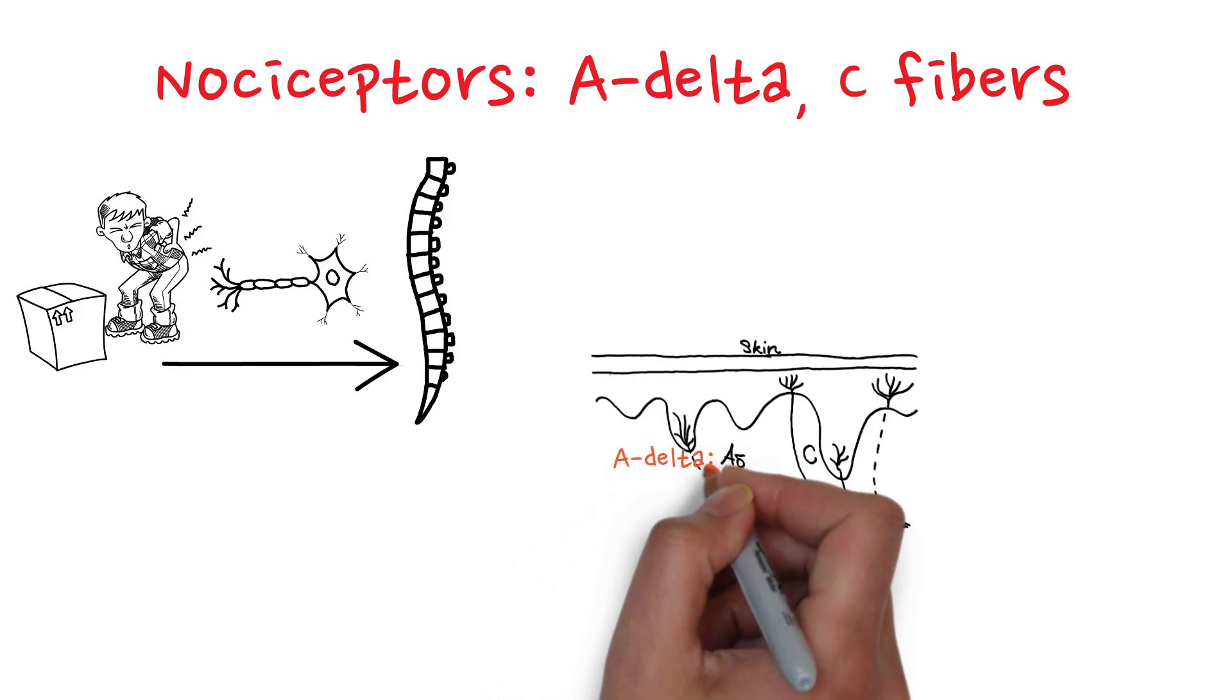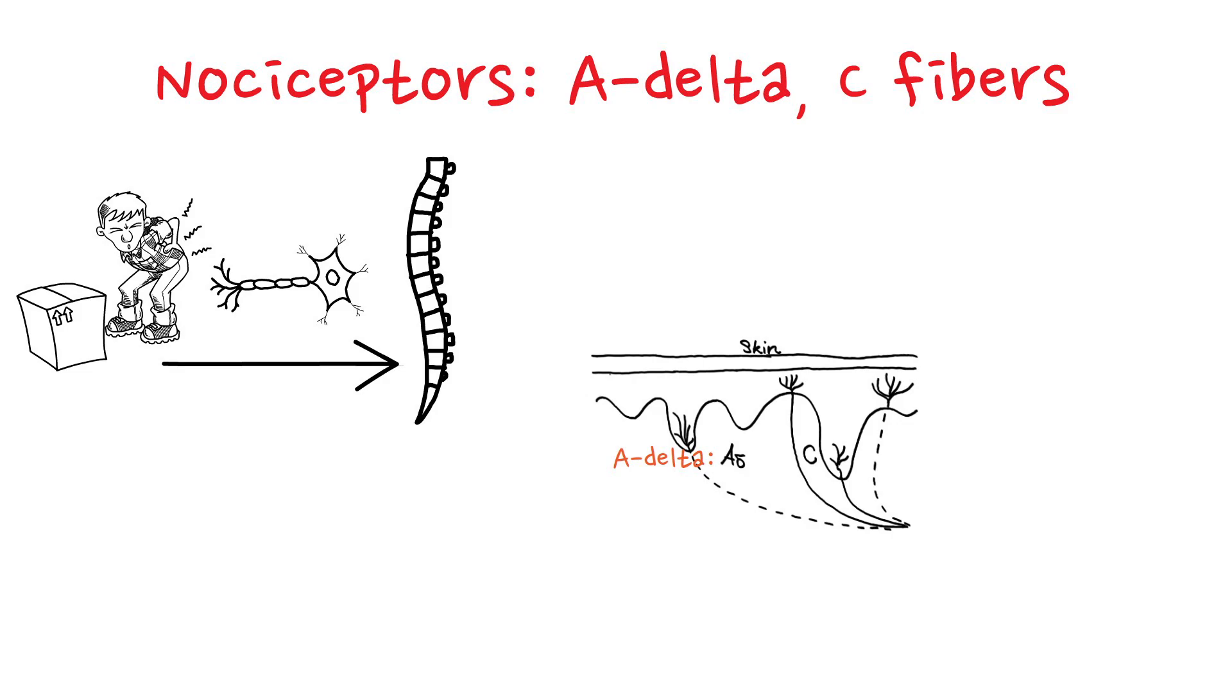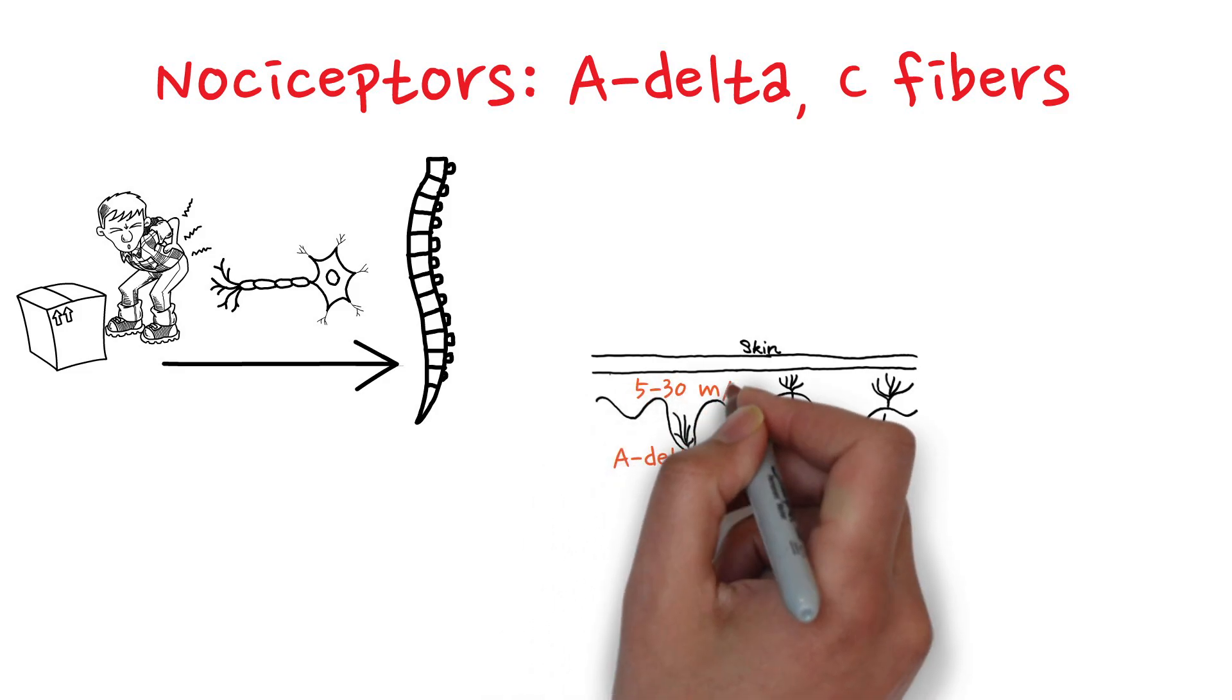Let's talk about A-delta fibers first. A-delta fibers are thin, myelinated nerve fibers. Because they are myelinated, they conduct signals relatively quickly, at speeds of about 5 to 30 meters per second.